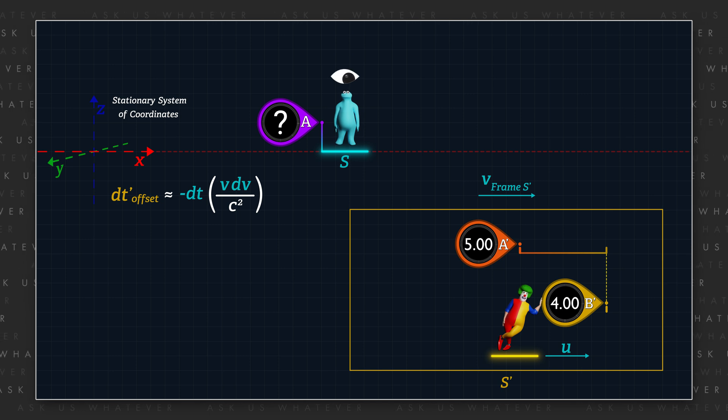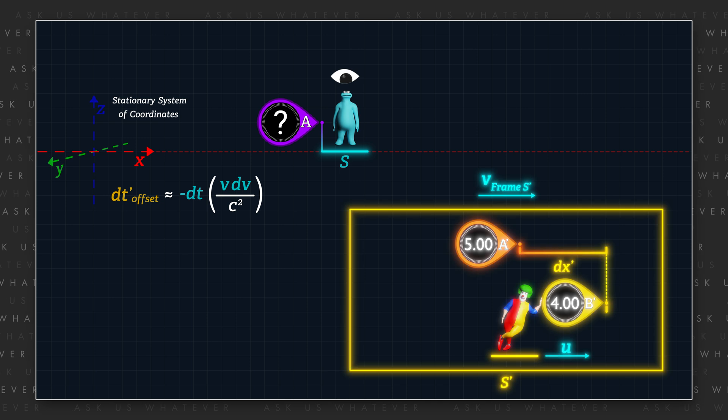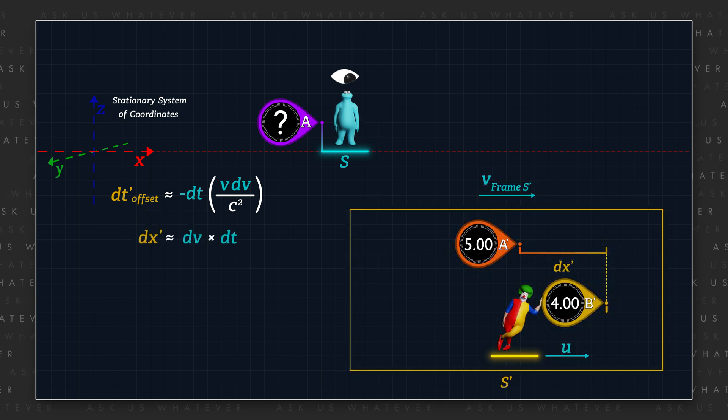Now again, provided that V is very small relative to C for any given interval of time DT, the distance that will separate clocks A' and B' in frame S' will approximately be their difference in speed DV times the time interval DT.